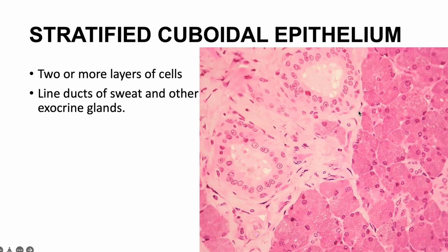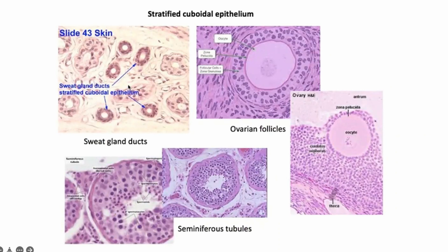Here is a closer look at the sweat gland showing stratified cuboidal epithelium — more than one cell layer, probably two here. If I ask you a question it would be about the sweat gland epithelium. For each type, you just need to know one example: one for simple squamous, one for stratified squamous, one for simple cuboidal, one for stratified cuboidal, one for simple columnar, one for stratified columnar, and one for pseudo-stratified. That's all.